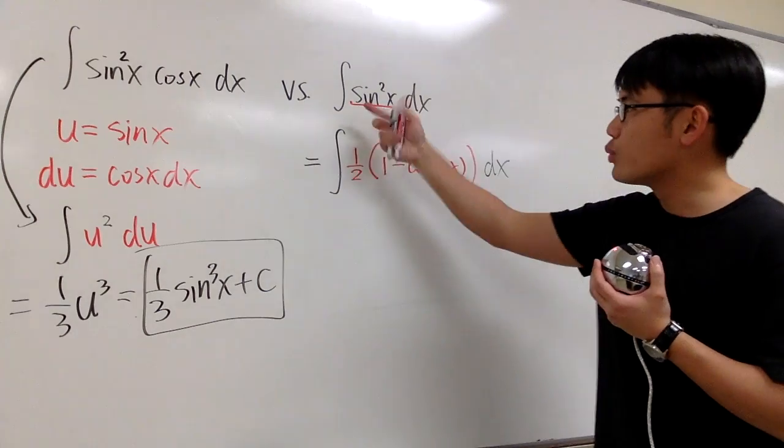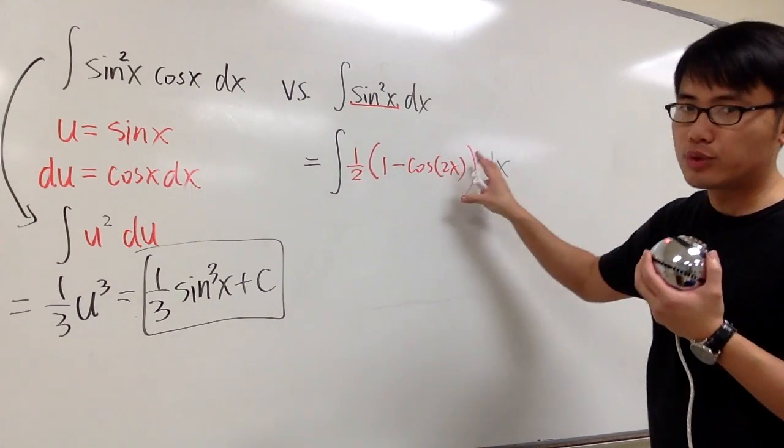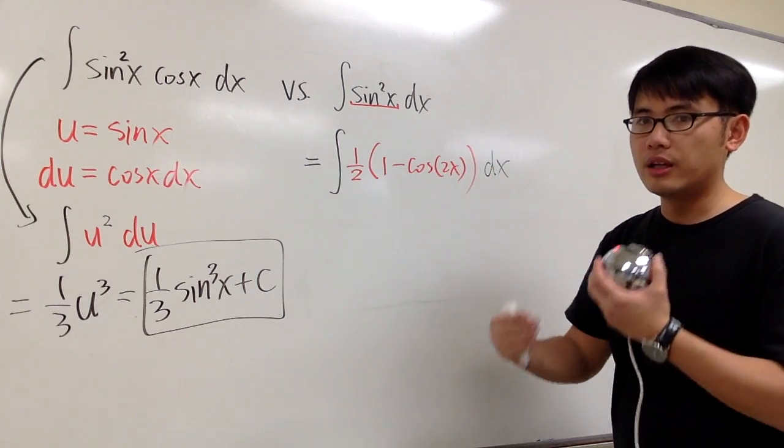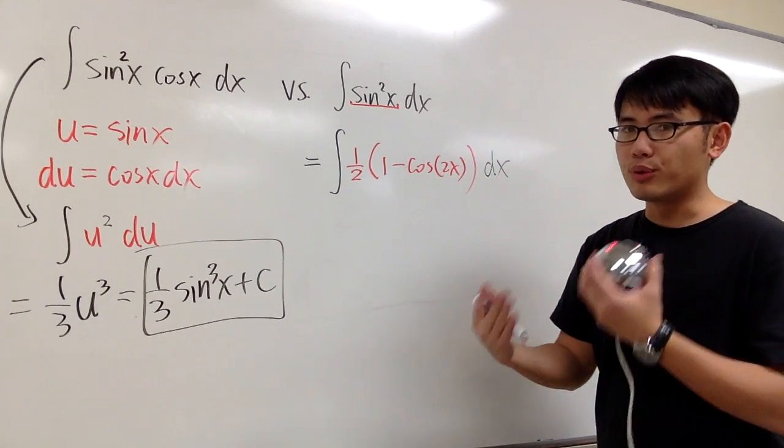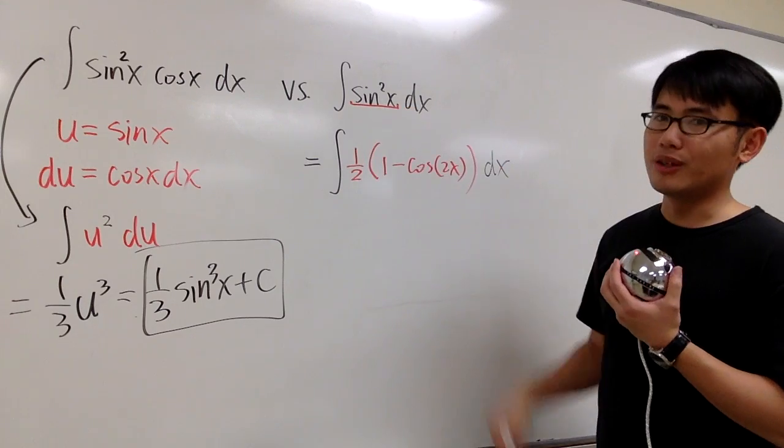Whenever you have an integral that's sine to the even power, you should always try to use this formula so that you can reduce the power. You may have to do it many times. Luckily, right here, we just need to do it once.